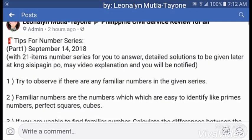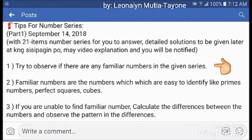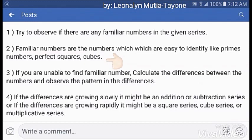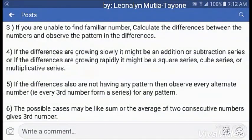Tip 1: Try to observe if there are any familiar numbers in the given series. Tip 2: Familiar numbers are numbers which are easy to identify, like prime numbers, perfect squares, or cubes. If you are unable to find a familiar number, calculate the differences between the numbers and observe the pattern. If the differences are growing slowly, it might be an addition or subtraction series; if growing rapidly, it might be a square, cube, or multiplicative series.